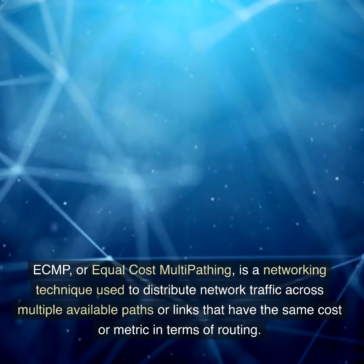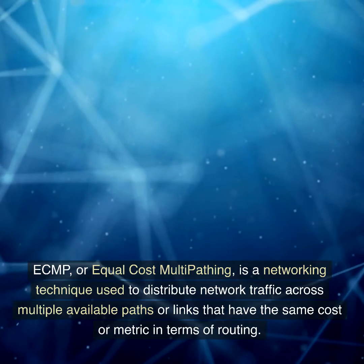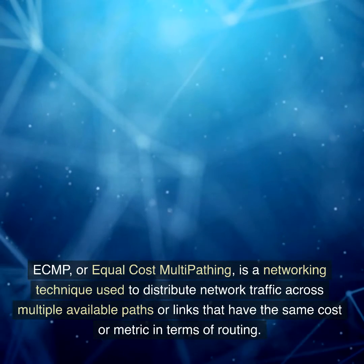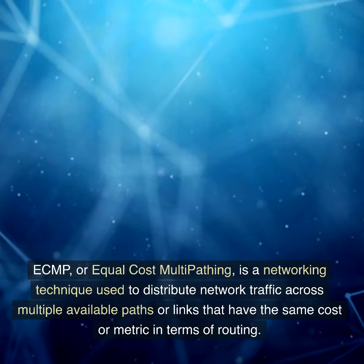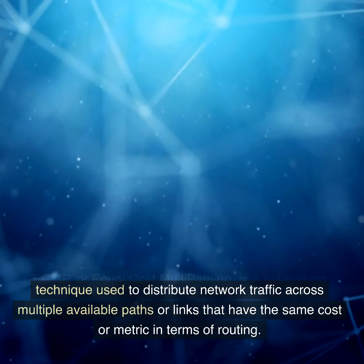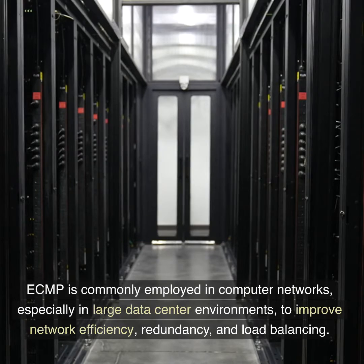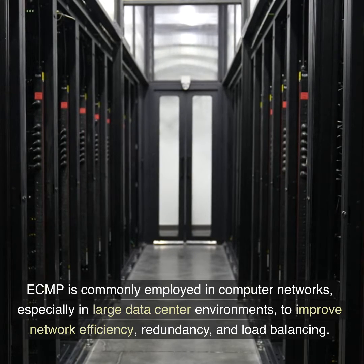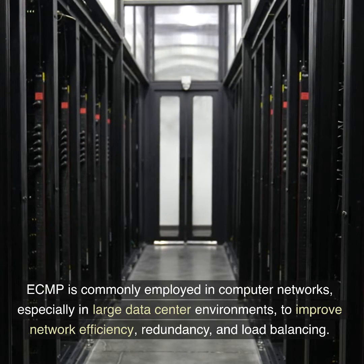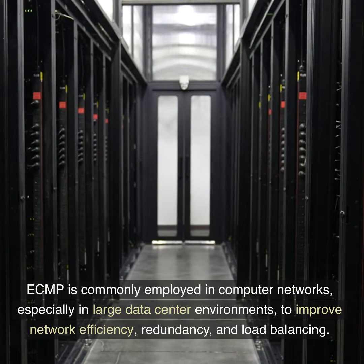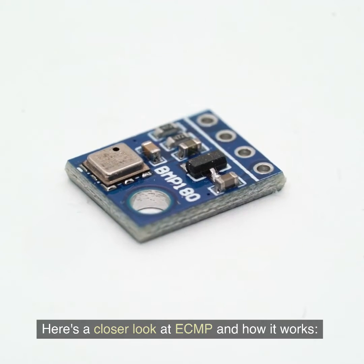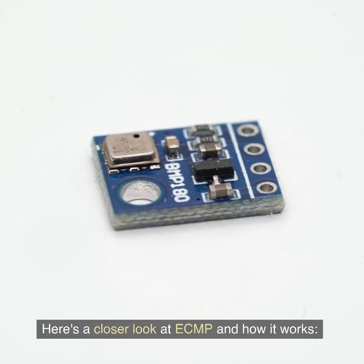ECMP, or Equal Cost Multipathing, is a networking technique used to distribute network traffic across multiple available paths or links that have the same cost or metric in terms of routing. ECMP is commonly employed in computer networks, especially in large data center environments, to improve network efficiency, redundancy, and load balancing. Here's a closer look at ECMP and how it works.